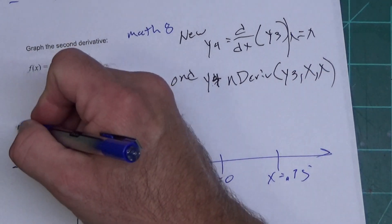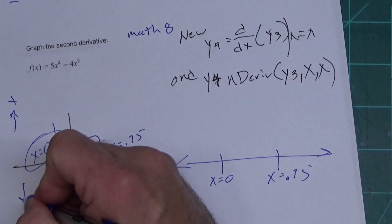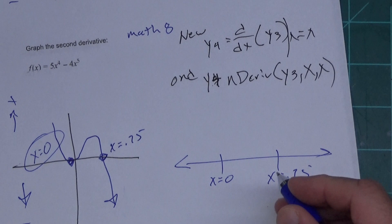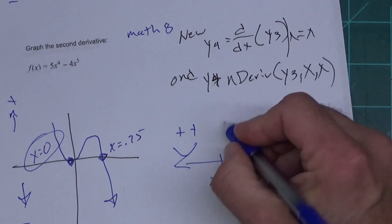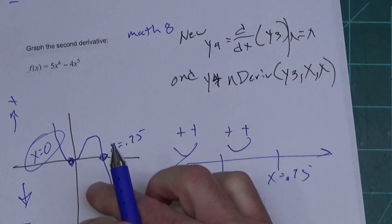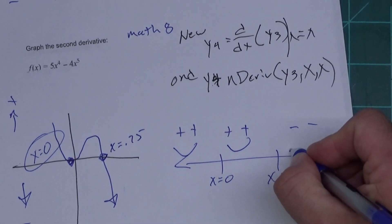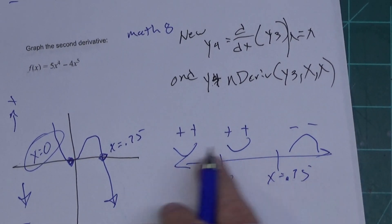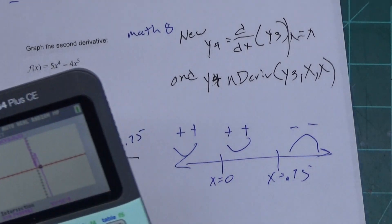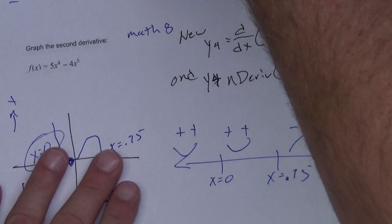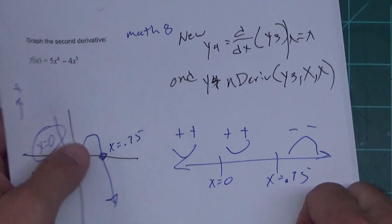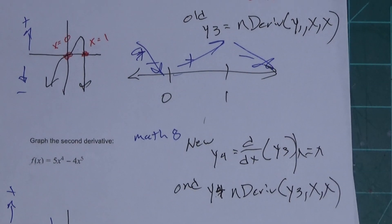And again, we have a positive sign this way and negative sign this way. So up here we're above, so I can put positive. Between we're above, so I can put positive. Over here we're below, so I can put negative. And you can see where it's concave up and concave down. So there are some uses to doing this with a calculator. Hope you find this helpful, useful, and not too boring. I will talk to you all later.